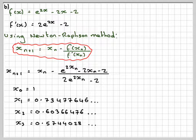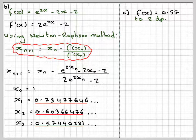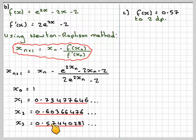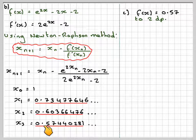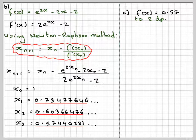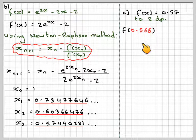So the last part asks us whether if it's f of x is equal to 0.57, if this will be accurate to two decimal places. So our value, if we go to two decimal places, will be 0.57. So the lower bound for 0.57 is 0.565. If we find f of 0.565, put that into here.